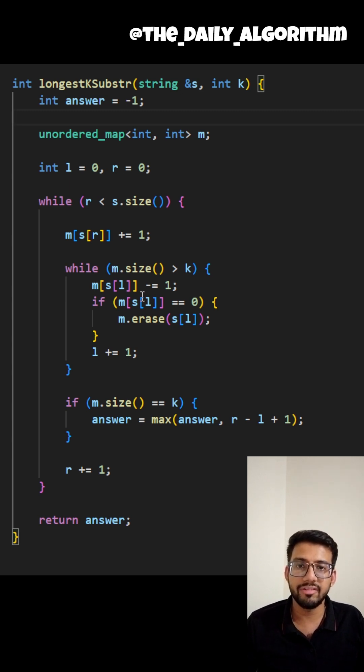Now, I'm also checking if my map's size becomes greater than K. In that case, I am moving my left pointer towards right and decreasing the frequency of that element. And if that frequency becomes 0, I'm deleting the key from that map.